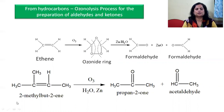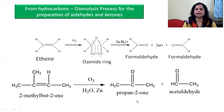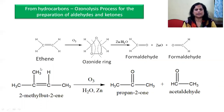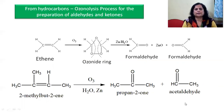One more example: 2-methylbut-2-ene when it shows the ozonolysis reaction we get two different carbonyl compounds — one is propan-2-one (a ketone) and one is an aldehyde. So by ozonolysis of 2-methylbut-2-ene we get one aldehyde and one ketone as products.